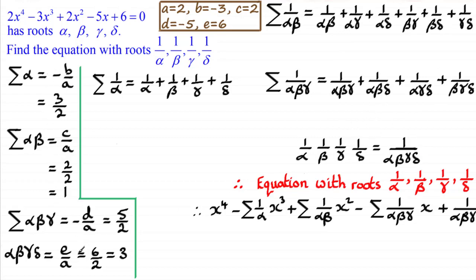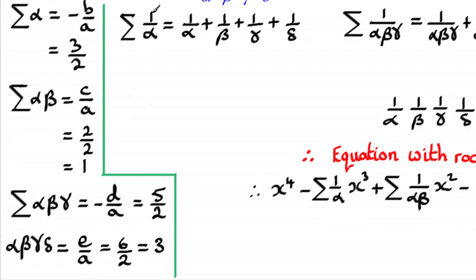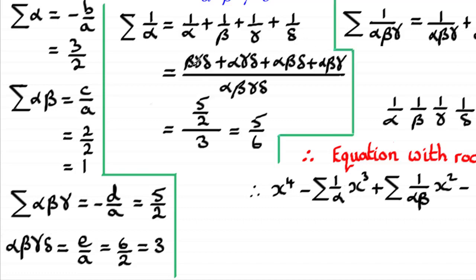Now I need to simplify these results. For the sum of 1 over alpha — sigma(1/α) — I put them all over the lowest common multiple, which is alpha·beta·gamma·delta in the denominator. The numerator turns out to be the sum of products of triple roots, which is 5/2, and the denominator alpha·beta·gamma·delta is 3. So 5/2 divided by 3 gives 5/6. That's the coefficient for x cubed.